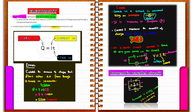The next topic to focus on is electricity. Electrical current is defined as the rate of flow of charge. The formula connecting charge, current, and time is: charge equals current times time (Q = It). For example, to calculate charge when 2 amperes flows for 10 minutes, convert minutes to seconds first: 2 times 10 times 60 equals 1200 coulombs. The unit for charge is coulombs.